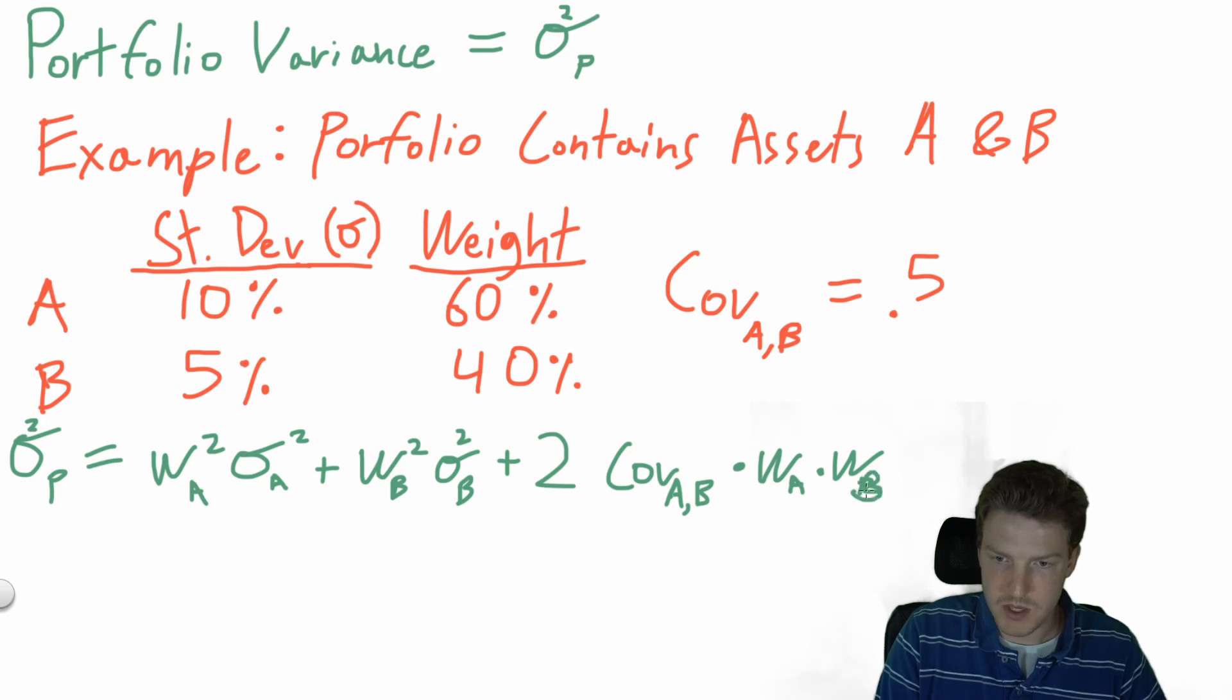I'll work this really quick for you. So weight of asset A, 60%, so 0.6 squared, multiplied by the standard deviation, so 0.1 squared.